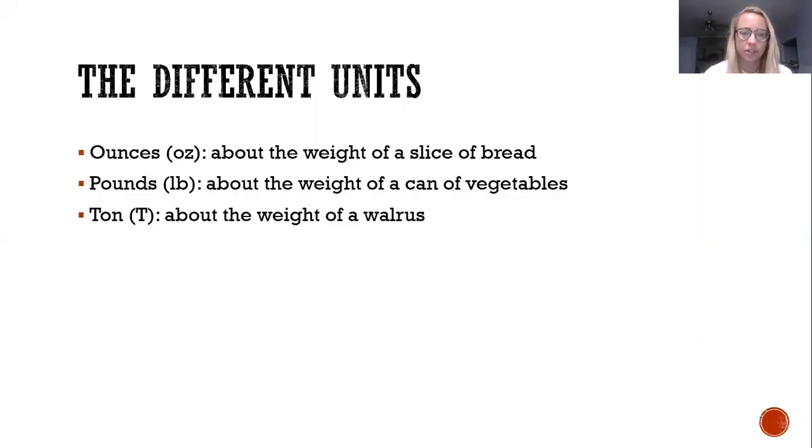So in our customary units, which is what we use in the United States, we have three units to measure weight or mass. We have ounces with the abbreviation OZ, and that's about the weight of a slice of bread. We have a pound, which abbreviation is LB, and that's about the weight of a can of vegetables.